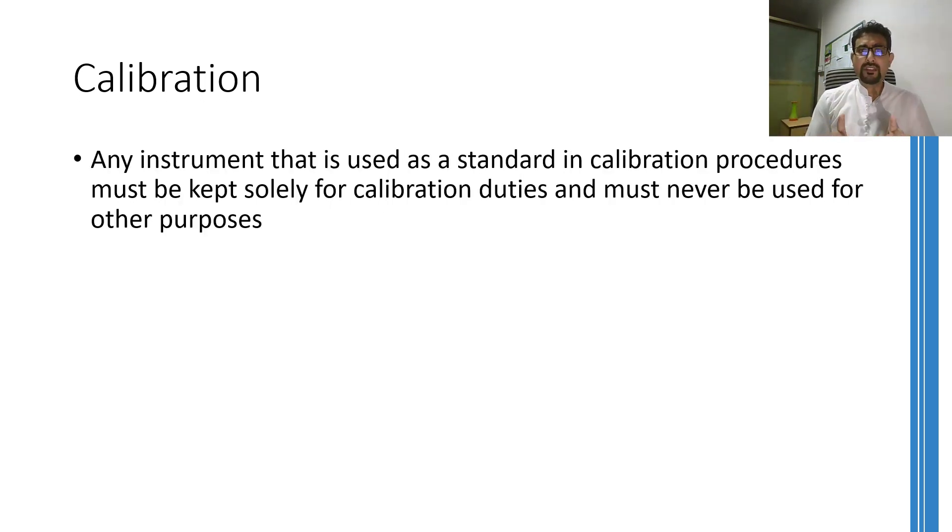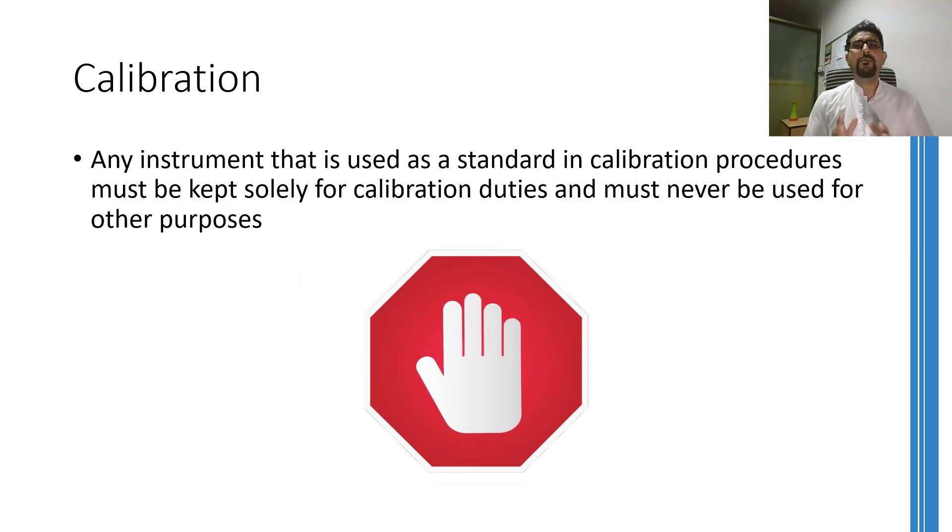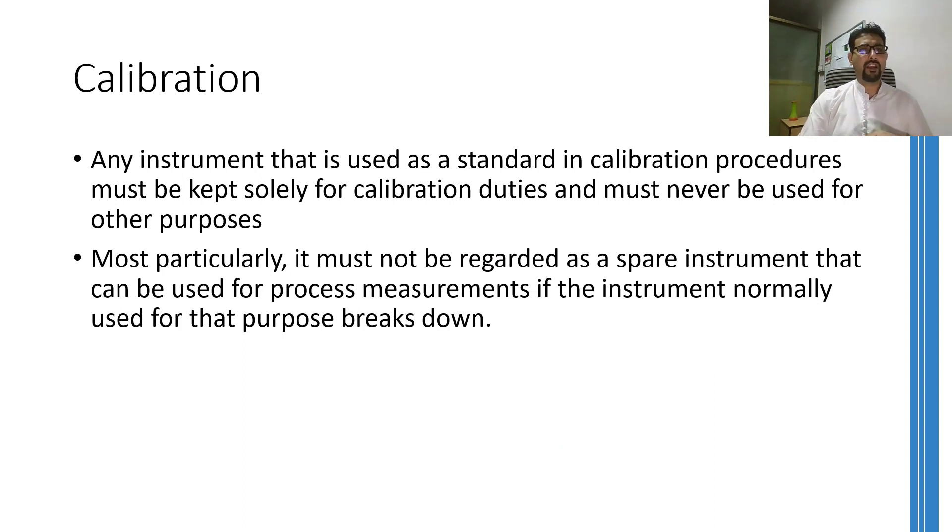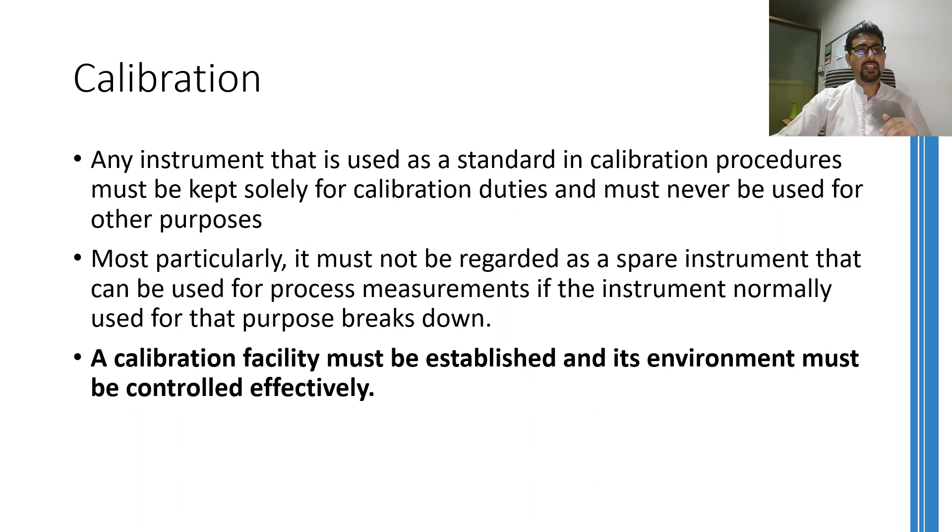Please note one thing that whatever instrument is being used for calibration procedures must never be used for any other purpose because if you are going to use that calibration instrument for any other purpose, then the accuracy and integrity of that instrument may be compromised. Therefore, calibration equipment must never be considered as a spare part or a spare instrument and must never be replaced even for a tiny amount of time for any instrument that is being used in the factory floor. Moreover, depending on the size of the factory or the industrial setup, a calibration facility must be established inside the industrial setup and its environment must be controlled effectively so that whenever there is a need for calibration, the first lab or the first facility any instrument must visit should be inside the industrial premises.